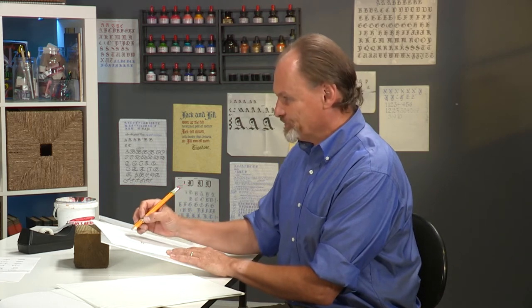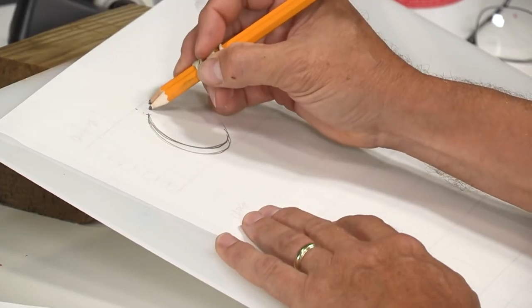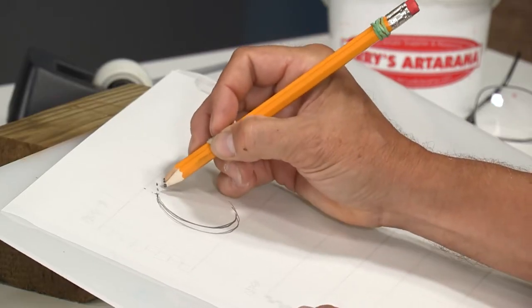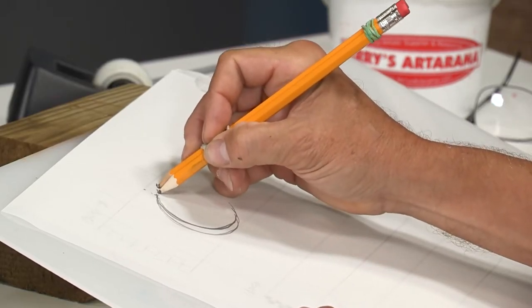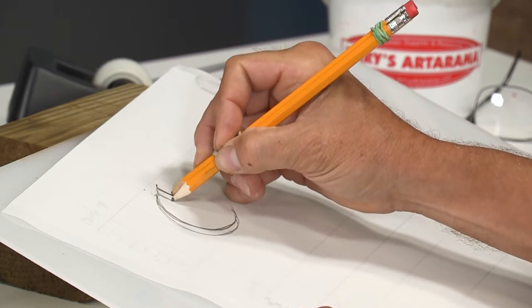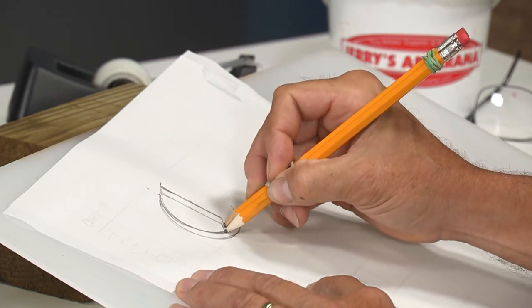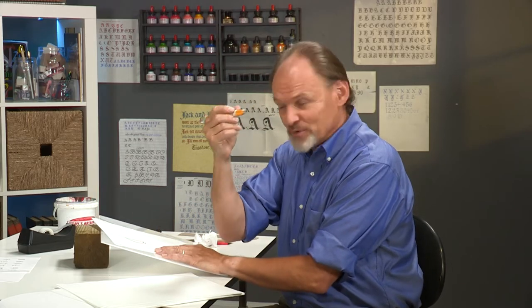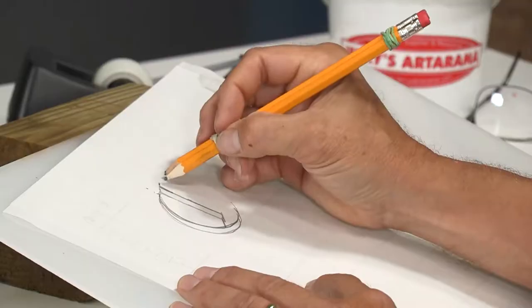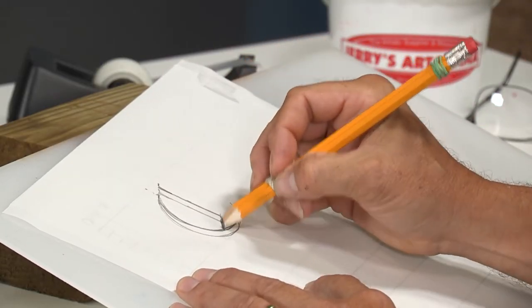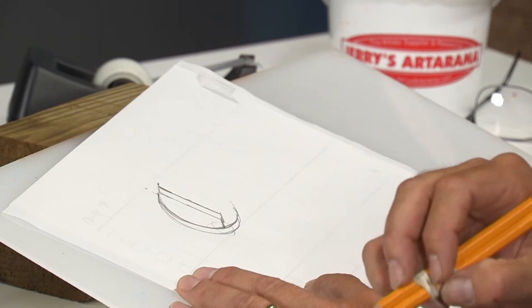The next stroke then is a vertical stroke that again starts a little bit higher than the first one. It doesn't necessarily touch at the top, but again, it doesn't start at the header, at the top line. It starts just a little bit below it. That's a vertical stroke, and then it comes down and connects with the arc down there.